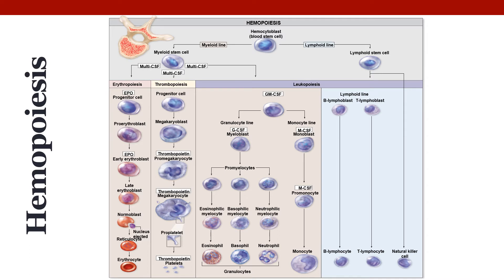All discussions of hemopoiesis end up coming down to a diagram that looks something like this. Some of your books may have this diagram; the book I'm teaching out of right now does not have everything lumped together into one nice master diagram, so your mileage may vary — you may have to look up several different smaller diagrams in your book to understand this.